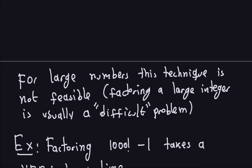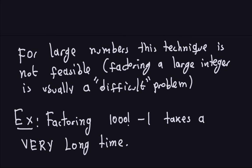For large numbers, this technique is not feasible — factoring a large integer is usually a difficult problem, meaning it's going to take a very long time. Even with a lot of computing power today, it's not possible to factor big integers. As an example to show that factorization is a hard problem: let's try to factor 1000 factorial minus 1. The exclamation point notation means I take all numbers from 1 through 1,000 and multiply them, then subtract 1, giving a huge number.